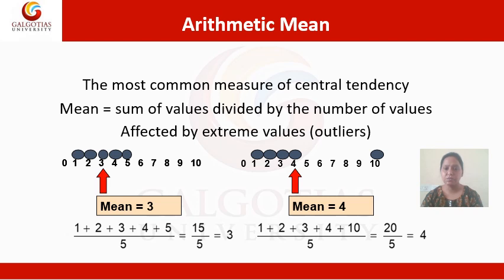In another example, the observed values are 1, 2, 3, 4, and 10. The value 10 can be referred to as an outlier because it is a very different, high-side figure. If we calculate the mean: 1 + 2 + 3 + 4 + 10 = 20, divided by 5 equals 4. The mean has changed drastically because of the outlier. So we should always remove outliers before calculating the mean, as they impact the average value.